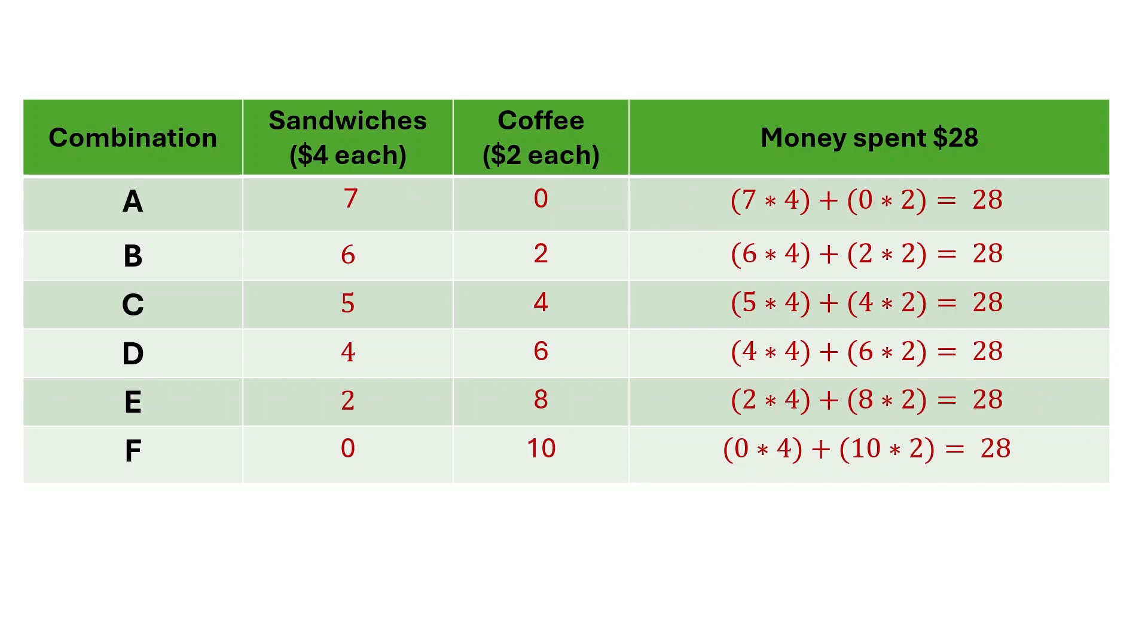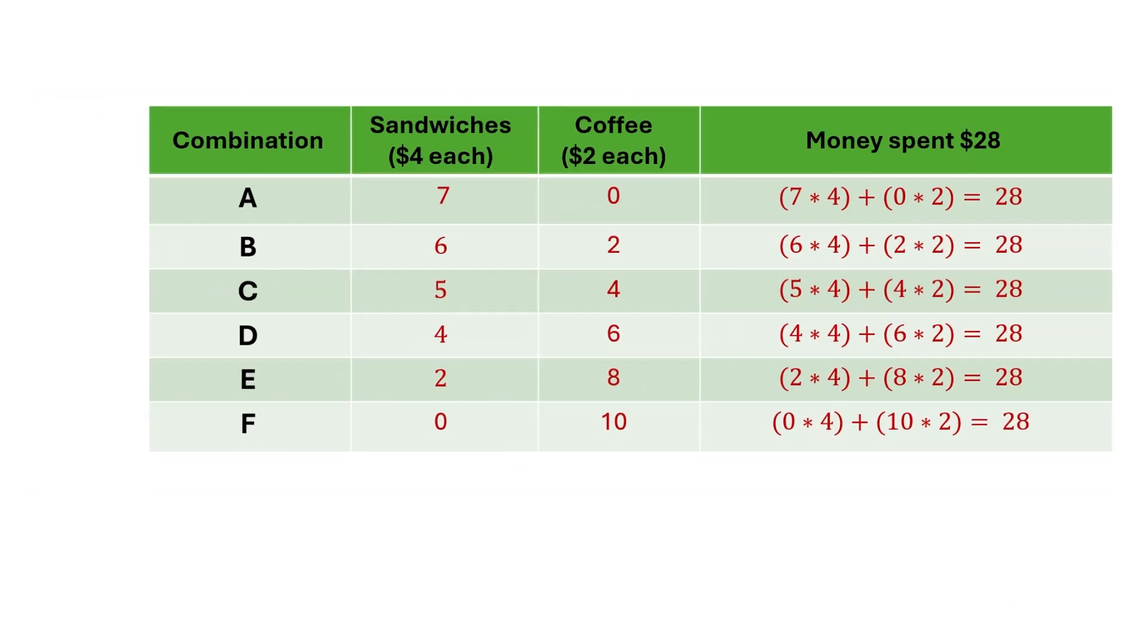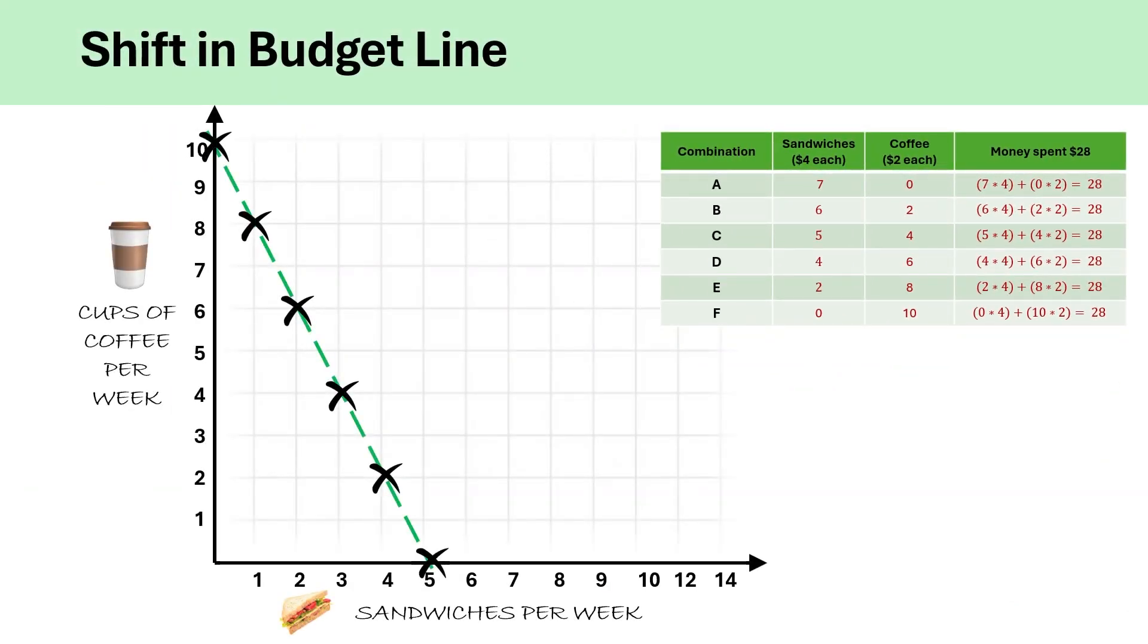It means that with a higher budget, the consumer can now afford more bundles of goods or combinations that were probably previously out of reach for him. This increase in the budget shifts the entire budget line outward, allowing the consumer to explore a wider range of choices while still maintaining the same prices for sandwiches and coffee.